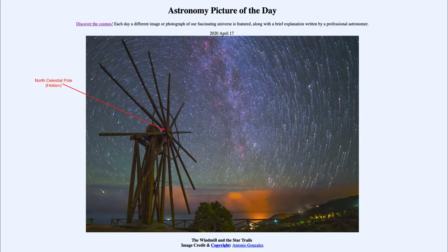We can see the stars making their trails as they move through the sky in an image combined from a number of different images — actually 39 images combined together, each about half a minute long, to show those star trails. We're looking over the course of several minutes to see how much the stars moved.